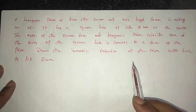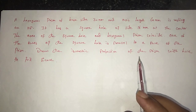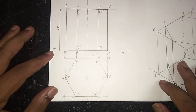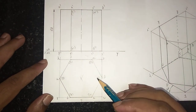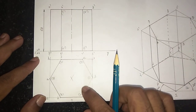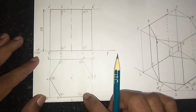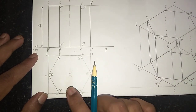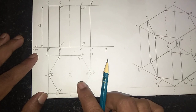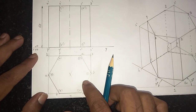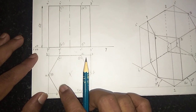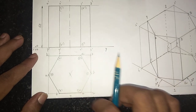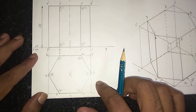They are asking us to draw the isometric projection of the prism. So in the diagram, first we need to draw the top view of the hexagonal prism. In the top view, the prism has two faces: the bottom level face PQRS and the top level face ABCD. The side of the prism is 30mm.